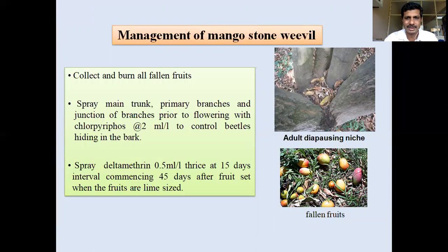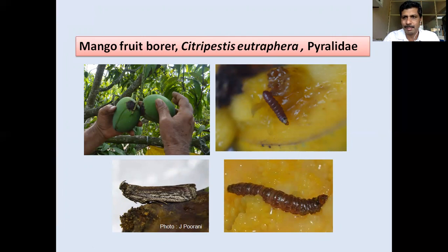A recent pest becoming problematic is the fruit borer, Citripestis iniella. When fruits are found together in clusters, the larva enters and causes damage. It is comparatively reddish in color, feeds on the pulp, causes fruit rot, and the fruit falls down.